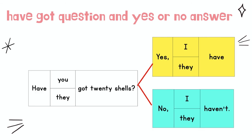Next, look at the pronouns here: you and they. They are plural and are used for a plural subject. So we use have. Have you got twenty shells? If you have got twenty shells, you have to answer yes, I have. If you haven't got any shells, you have to say no, I haven't. Have they got twenty shells? If they have got twenty shells, you have to answer yes, they have. Otherwise, you have to say no, they haven't.